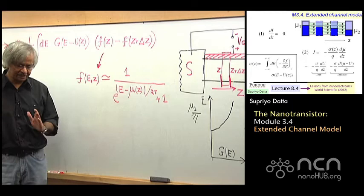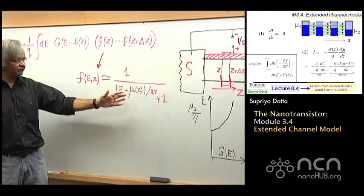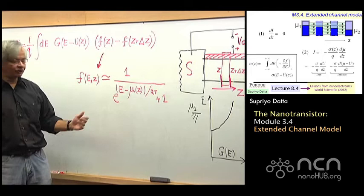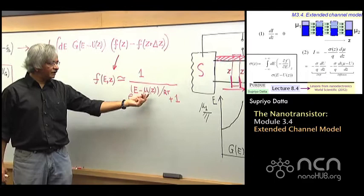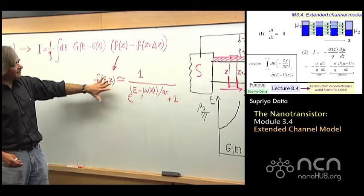Quasi-Fermi level in the sense that you really have this Fermi level and Fermi distribution only if a region is completely in equilibrium. But here we are talking of something that's really not quite in equilibrium, and we'll talk about this a little more even in the next module. Often the assumption is that you can represent it this way where this mu is like a quasi-Fermi level.